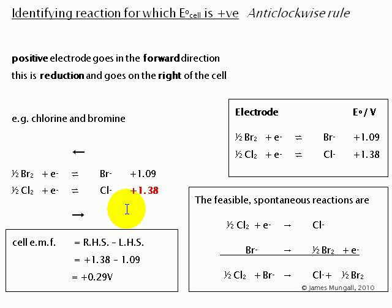The cell EMF is the chlorine cell EMF, the 1.38, minus the bromine standard electrode potential, because the chlorine is proceeding in the forward direction and the bromine is going in the reverse direction. Finally, we can rewrite these half equations with the chlorine in the forward direction, the bromine reversed, and then conclude that the spontaneous reaction would be chlorine with bromide becoming chloride and bromine.